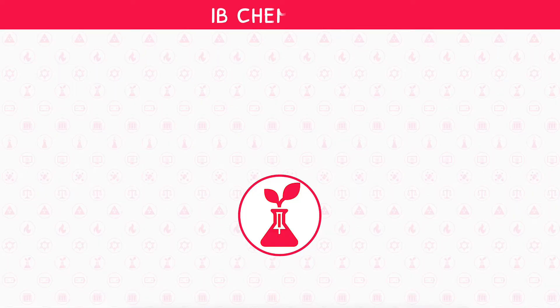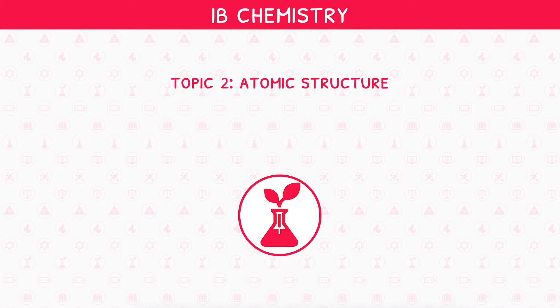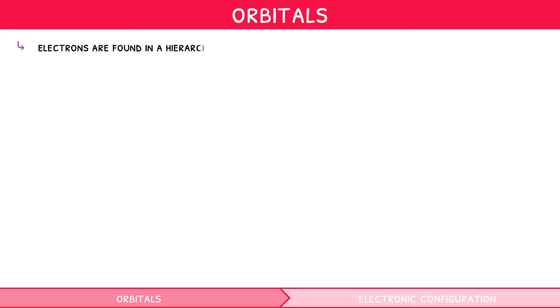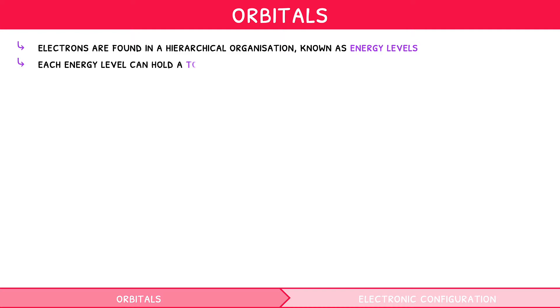Welcome back to our IB Chemistry video series. This is the third and final video in IB Chemistry Topic 2, Atomic Structure, where we will be looking at orbitals and electronic configuration. As mentioned in the first IB Chemistry Topic 2 video, electrons are found in a hierarchy known as energy levels. Each energy level can hold a total of 2n² electrons, where n is the energy level number.